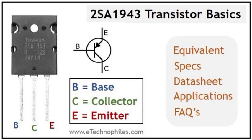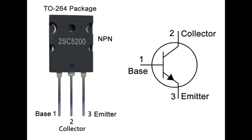Working Principle of the 2SC5200 Transistor. The 2SC5200 operates as a high-power amplifier or switch depending on the circuit configuration. Being an NPN transistor, it follows the basic working principle of BJTs. In amplification mode, using a common emitter configuration, when a small current is applied to the base through a resistor to limit current, it allows a much larger current to flow from collector to emitter. This property is used in audio amplifier circuits where the transistor helps boost weak signals to drive speakers. The transistor operates in the active region, providing linear amplification with minimal distortion.